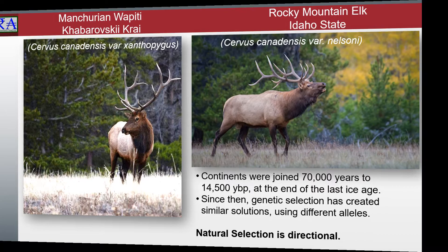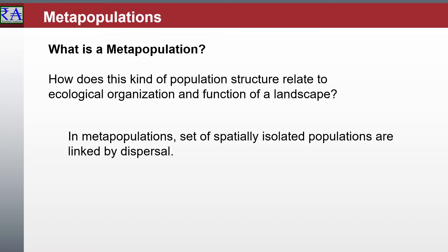A metapopulation is a group of populations that are separated by space but consist of the same species. These spatially separated populations integrate as individual members move from one population to another. The metapopulation concept is important because species face issues related to environmental impacts and have conservation options that can be evaluated more completely, or only, in a metapopulation context.